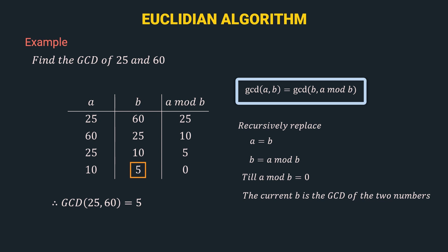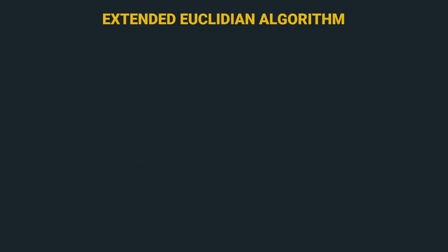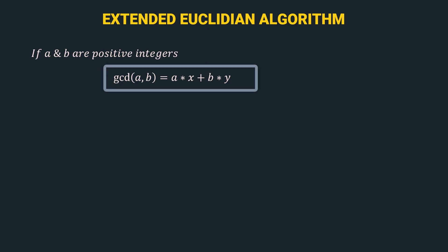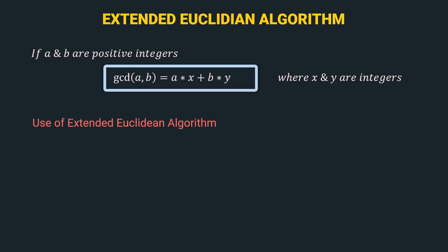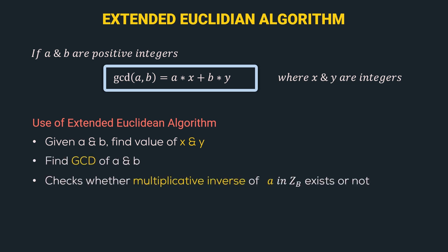This was all about the Euclidean algorithm. Now we have completed the foundation required for the extended Euclidean algorithm. If a and b are positive integers, then gcd(a, b) = a·x + b·y, where x and y are integers. Using the extended Euclidean algorithm, given a and b we can find the values of x and y. It also finds the gcd of a and b, checks whether the multiplicative inverse of a in Z_b exists, and gives the multiplicative inverse if it exists.